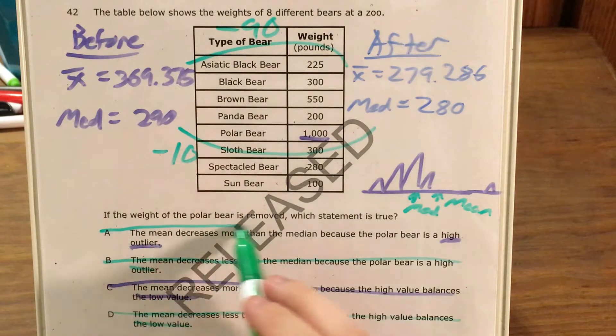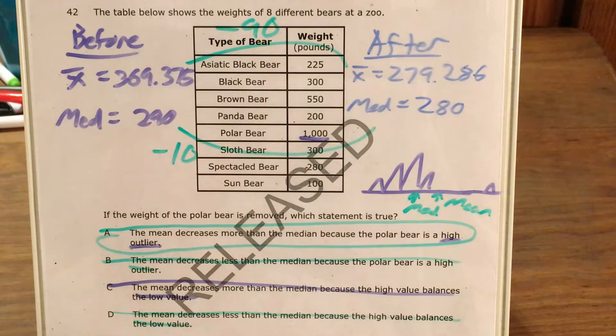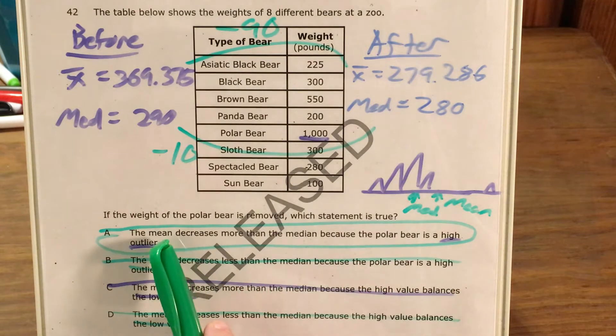So that's why we can use the definition of outlier to say that A is the correct answer because the high outlier made the mean increase more, and when we took it away, the mean decreased more.